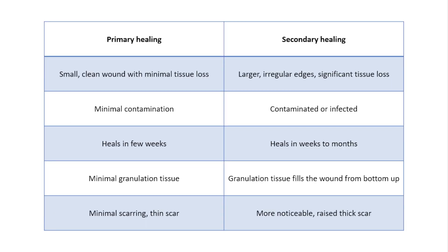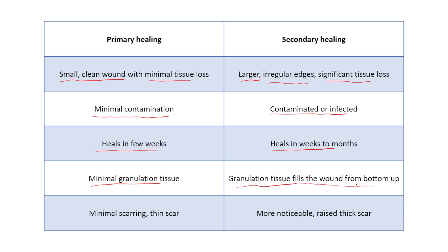Here we have a comparison table. In primary healing, the wound is small, clean, with minimal tissue loss, and we approximate the edges with sutures. In secondary healing, the wound is larger, irregular, with significant tissue loss. Primary healing involves minimal contamination, while secondary healing involves contaminated or infected wounds. Primary healing takes a few weeks, while secondary healing takes weeks to months. Primary healing produces minimal granulation tissue, while in secondary healing, granulation tissue fills the wound from bottom up. Finally, primary healing results in minimal, thin scarring, while secondary healing produces more noticeable scars with raised, thick edges.